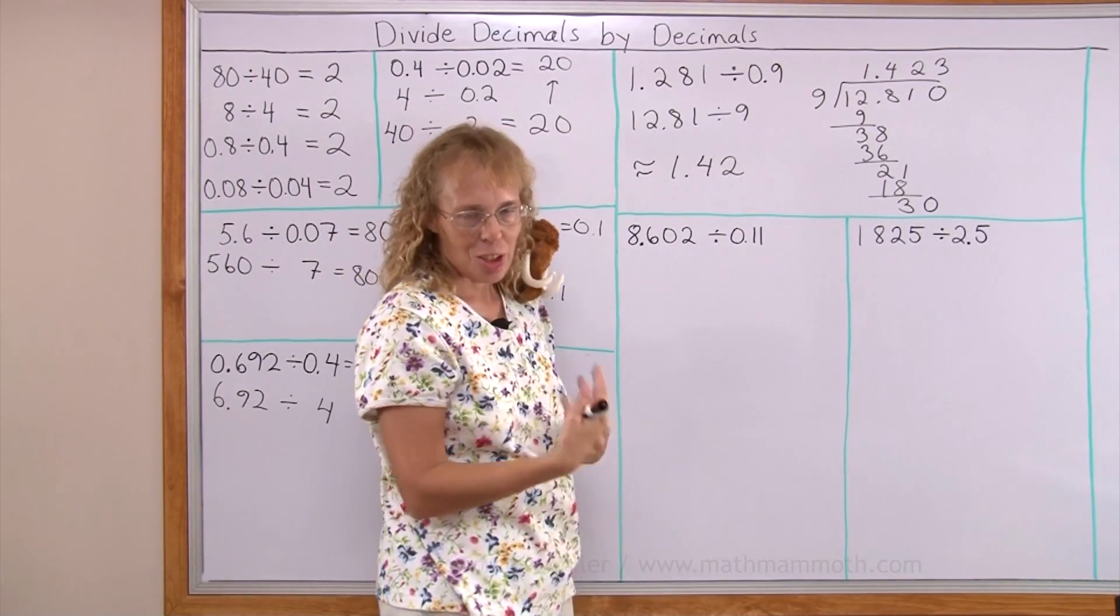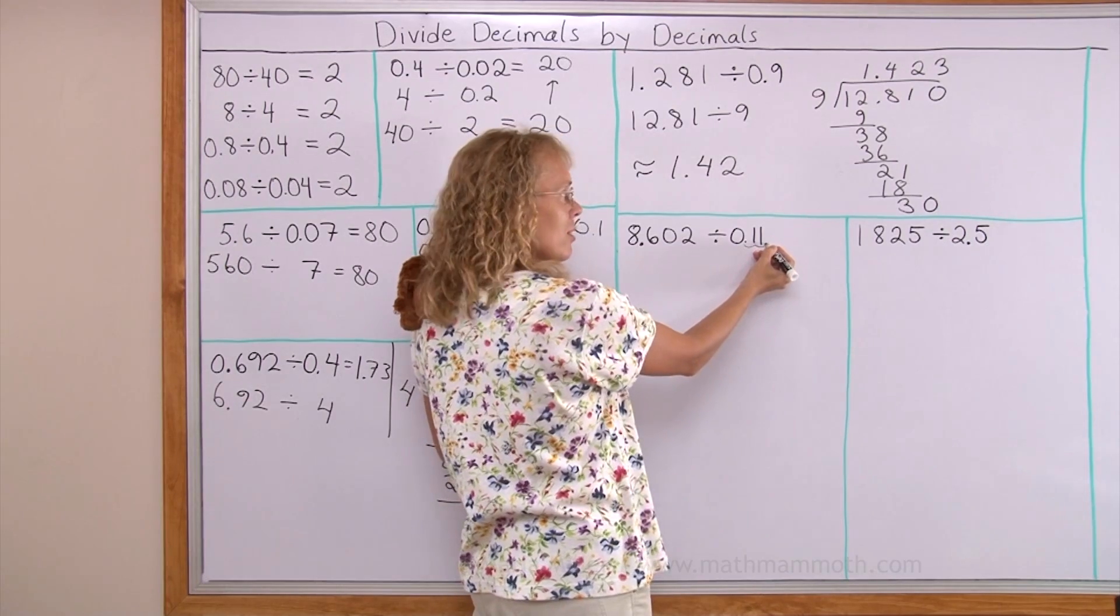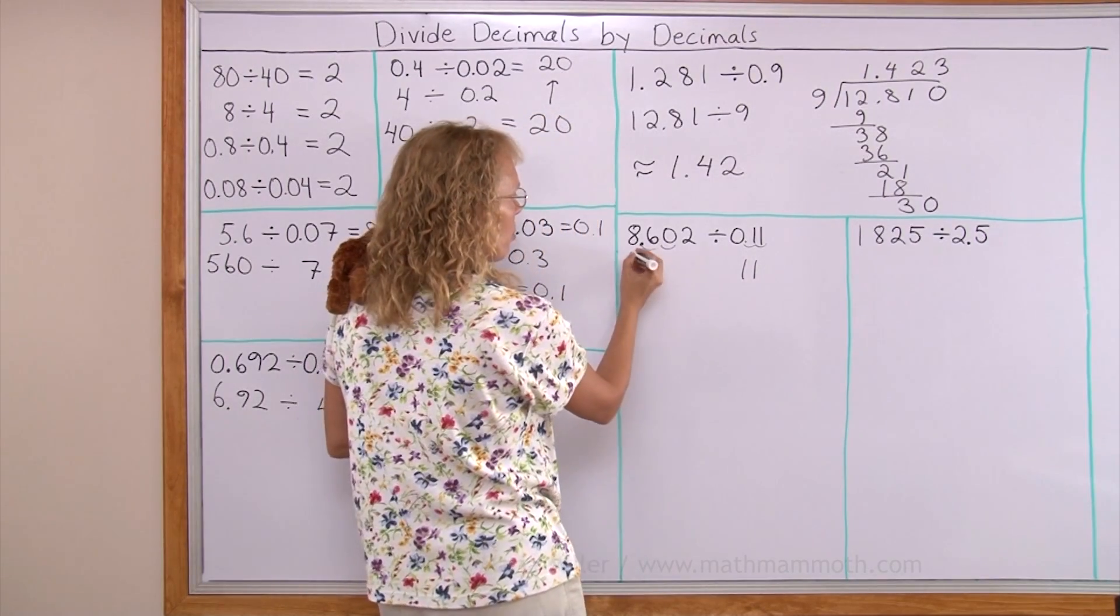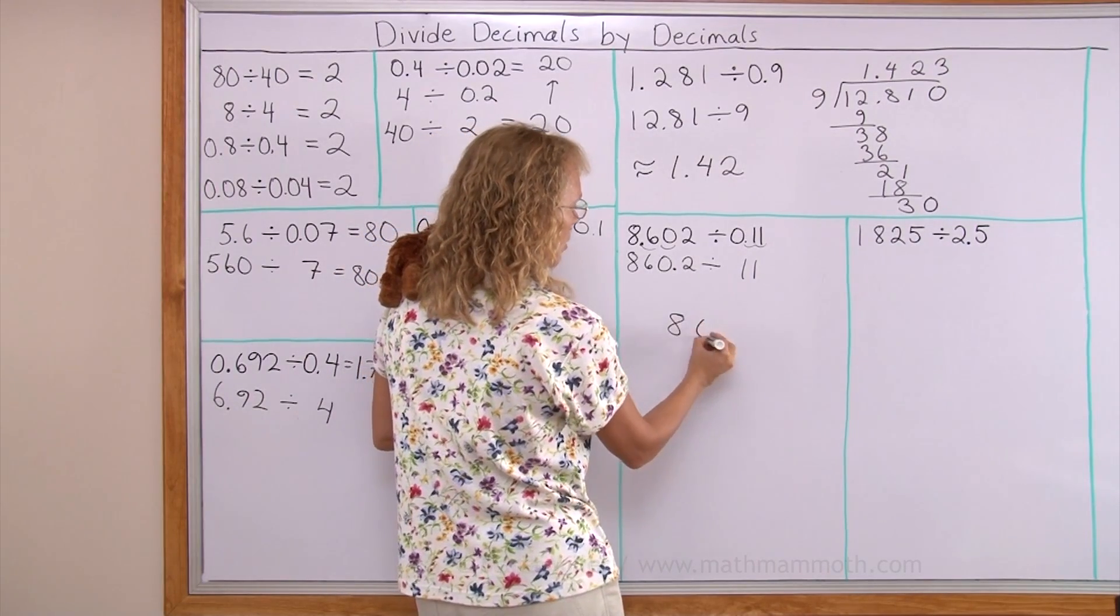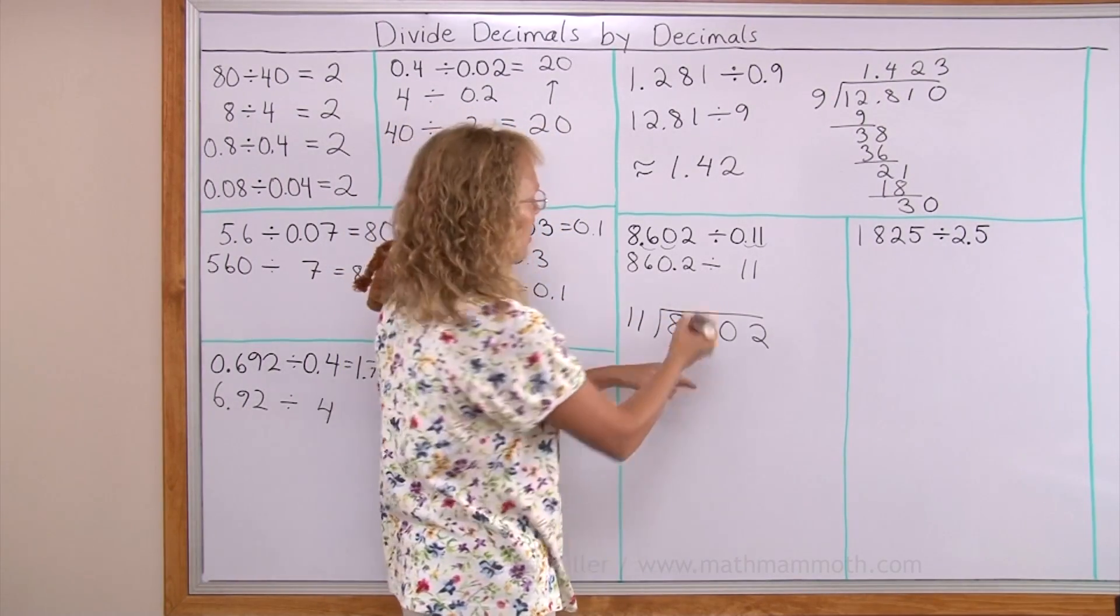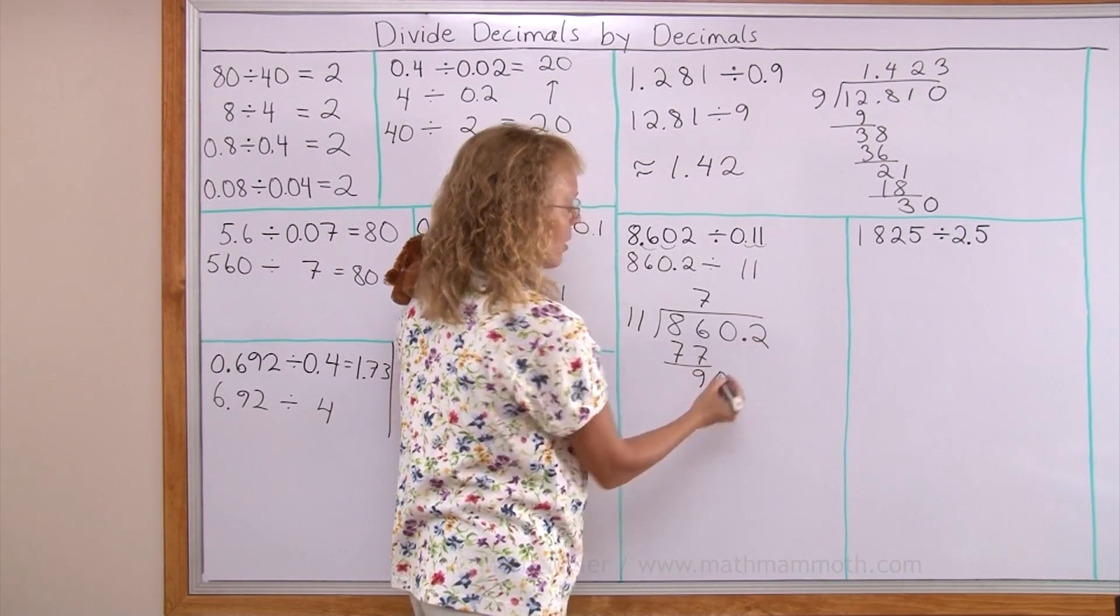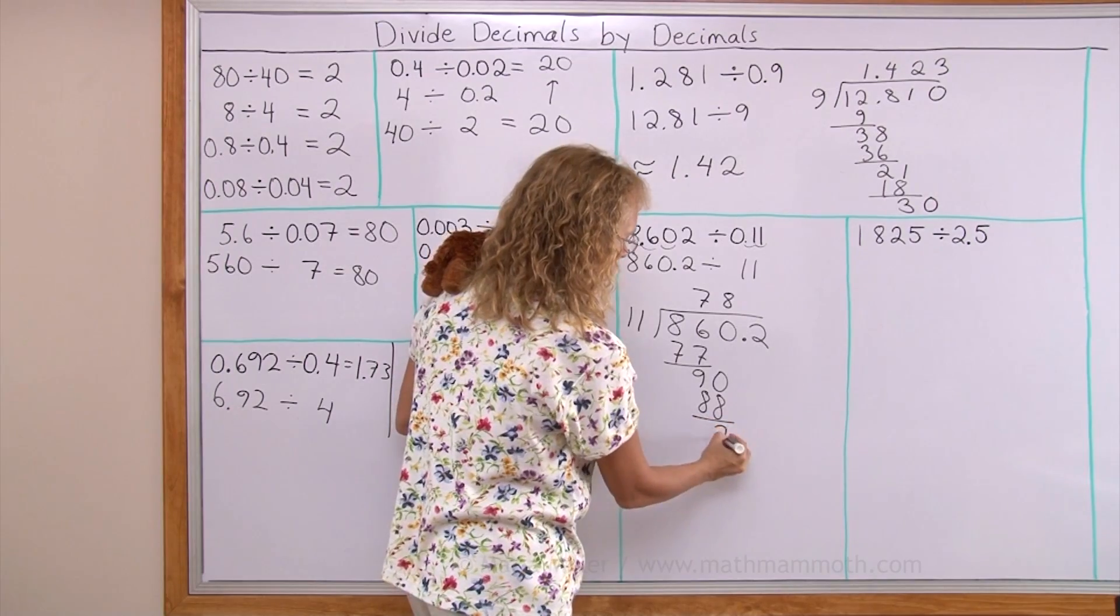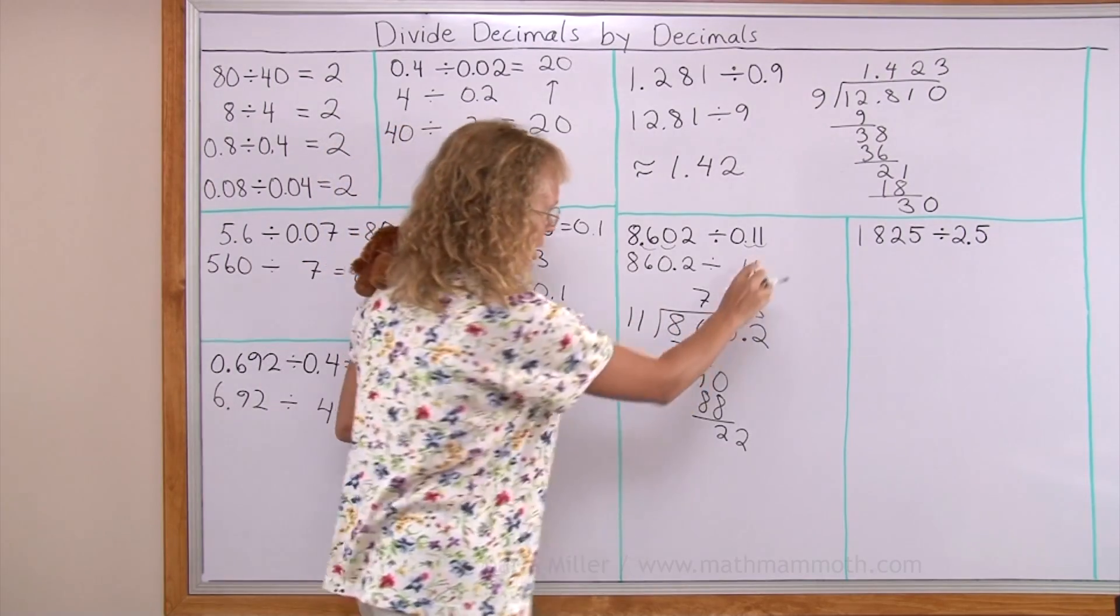Here, I will first change the problem. So that I will get 11 as my divisor. To do that, I multiply by 100. Here, multiply by 100. Which means moving the decimal point. So we will get 860.2. Now, ready to divide. 11 goes to 86. Not 8 times, but 7 times. Oh, I'm sorry. I forgot. There was a decimal point here in the dividend. And then, to 90 it goes 8 times. And then to 22, 2 times. So that's our answer. 78.2 is the answer to our original problem.